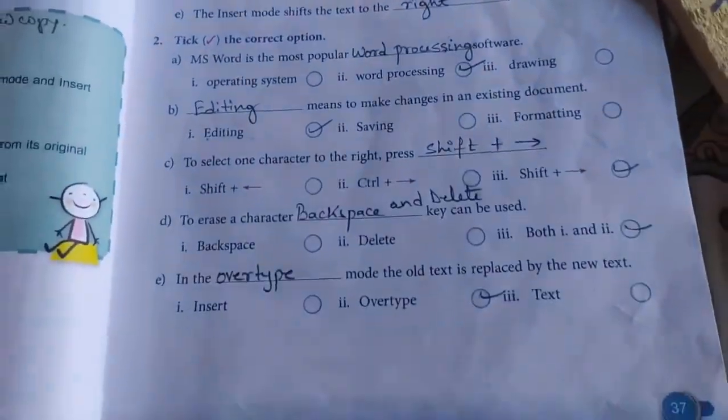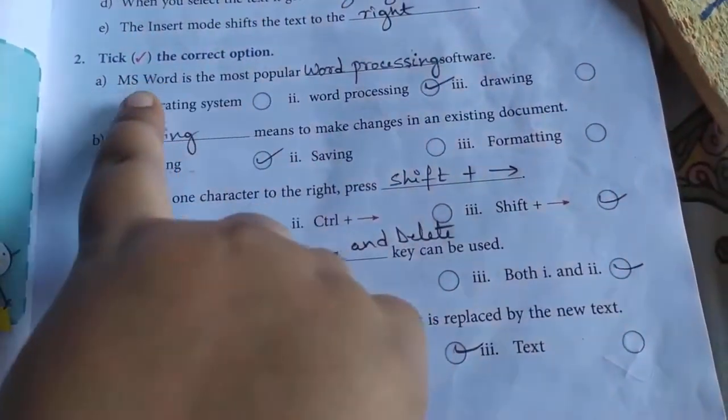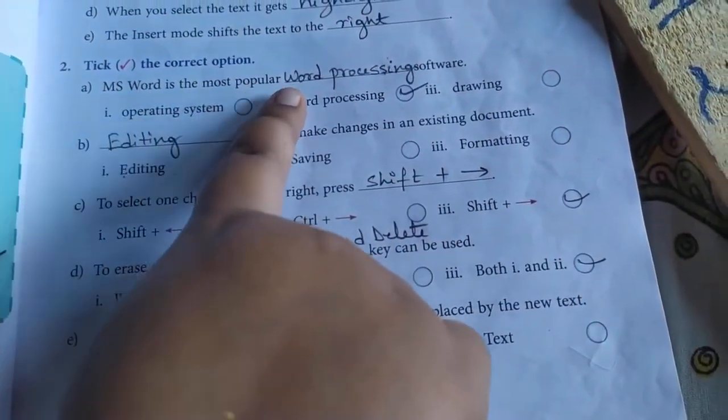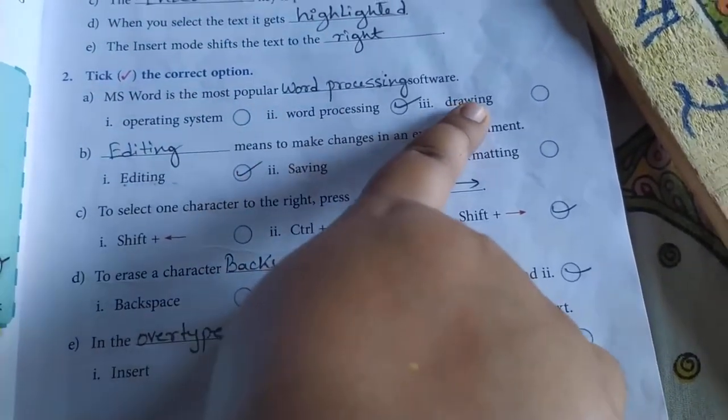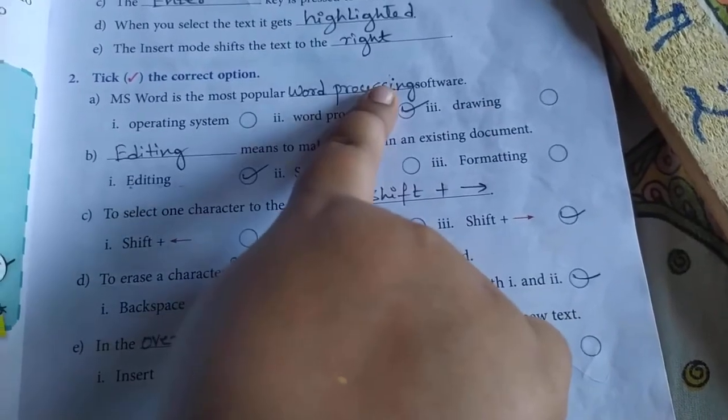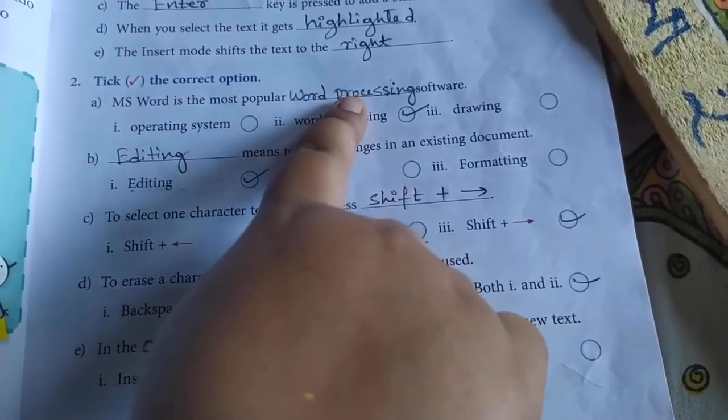Now next. Tick the correct option. MS Word is the most popular blank software. Options: operating system, word processing, drawing. Word processing software is correct. Give a tick and write the answer over here.